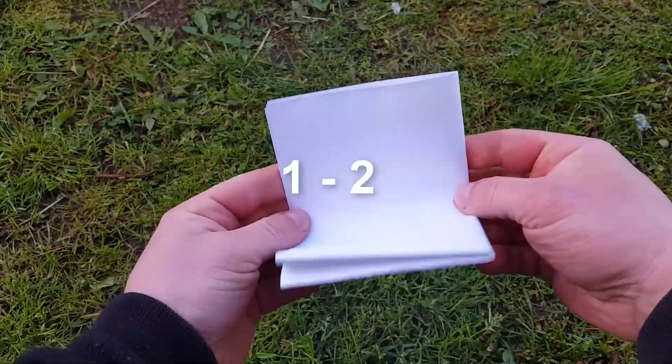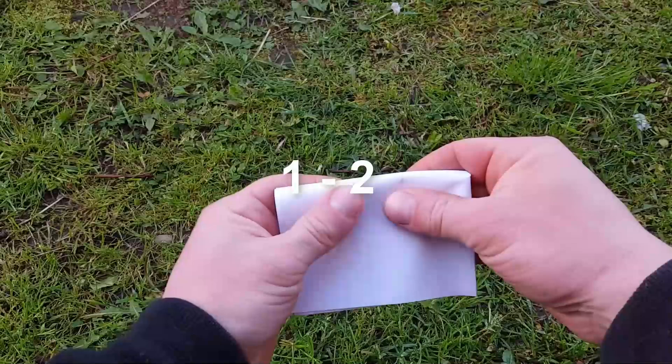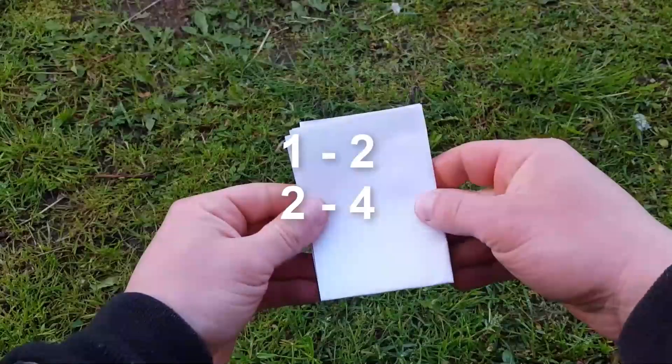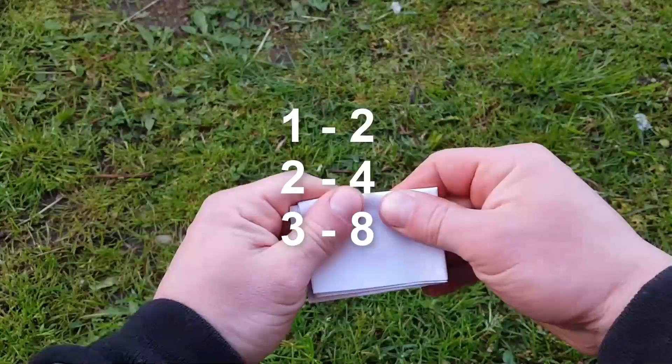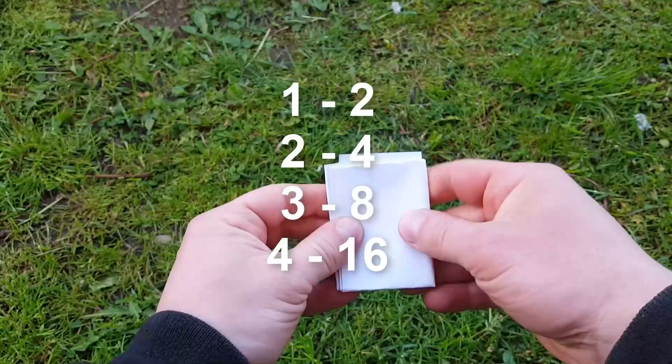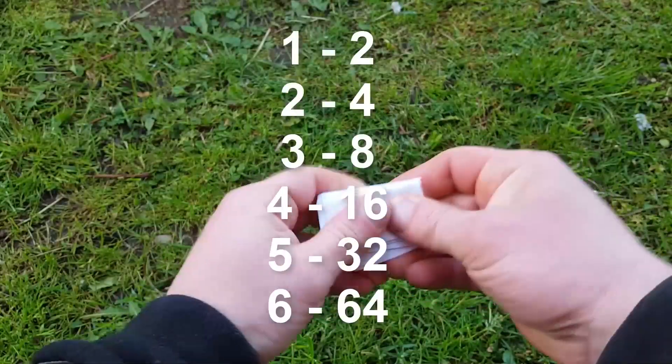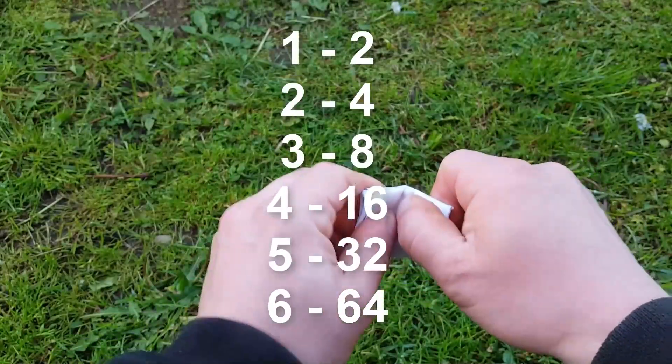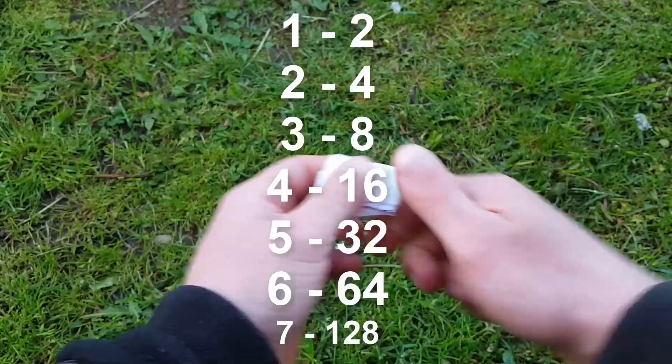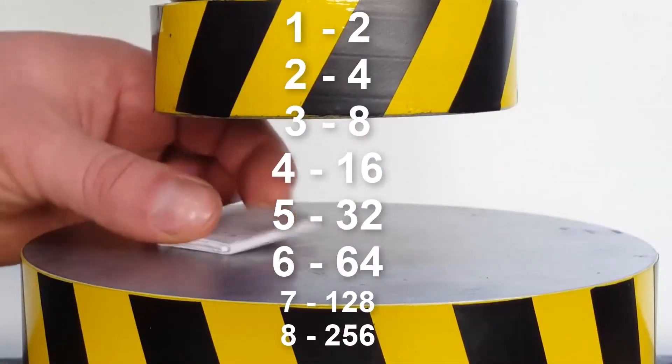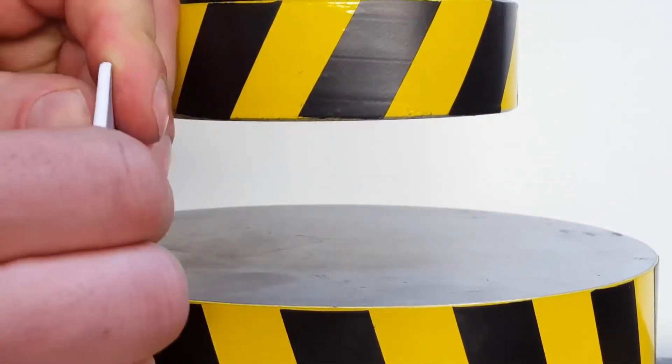At the first folding, there will be two layers. At the second, 4. At the third, 8. At the fourth, 16. At the fifth, 32. At the sixth, 64. And at the seventh, 128. And at the eighth, 256 layers.